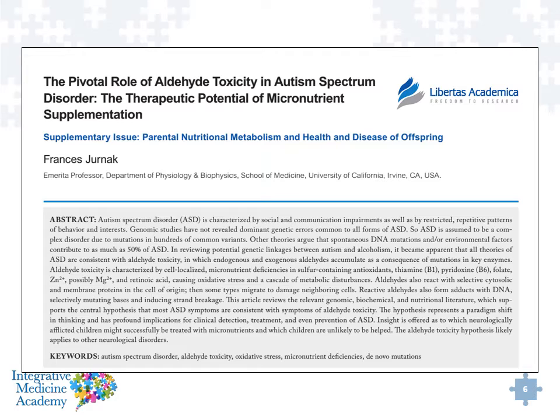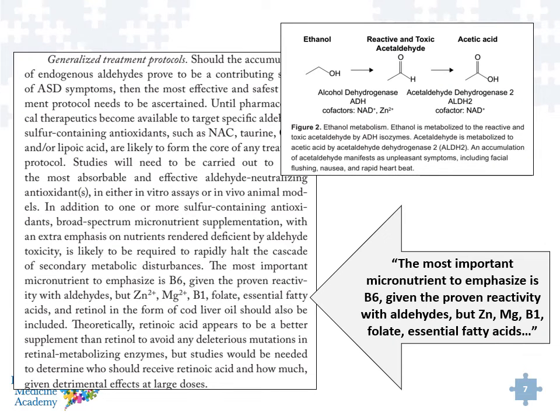We know that in the autism community, many autistic individuals have problems with candida and other yeast organisms. They also have a lot of toxins that accumulate in the body because of these fungal organisms. There was an article that came out a few years back looking at aldehyde toxicity in autism, and one of the interesting things discussed is that — true in autism as well as in other people with underlying chronic candida problems — various nutrient deficiencies arise.